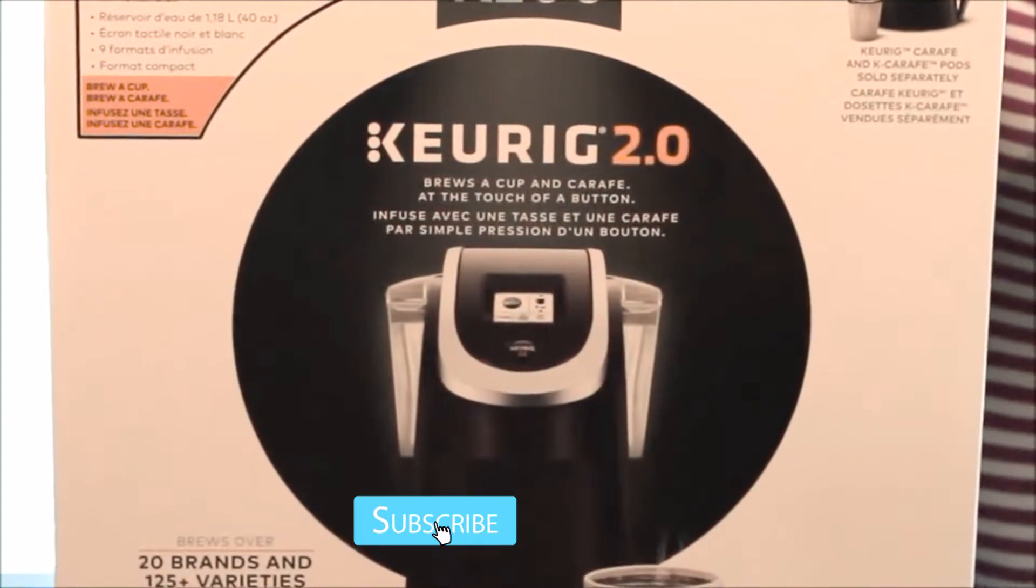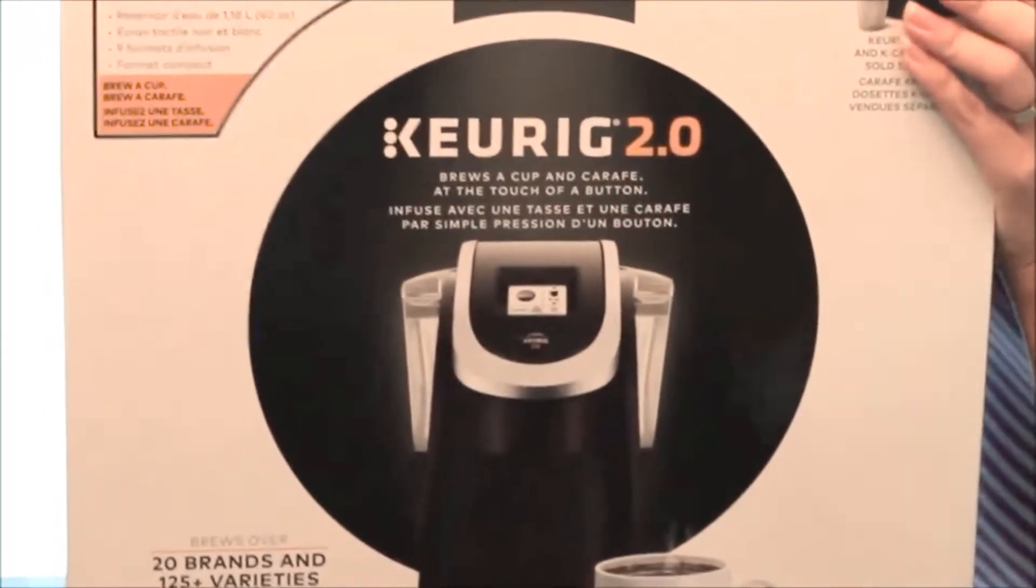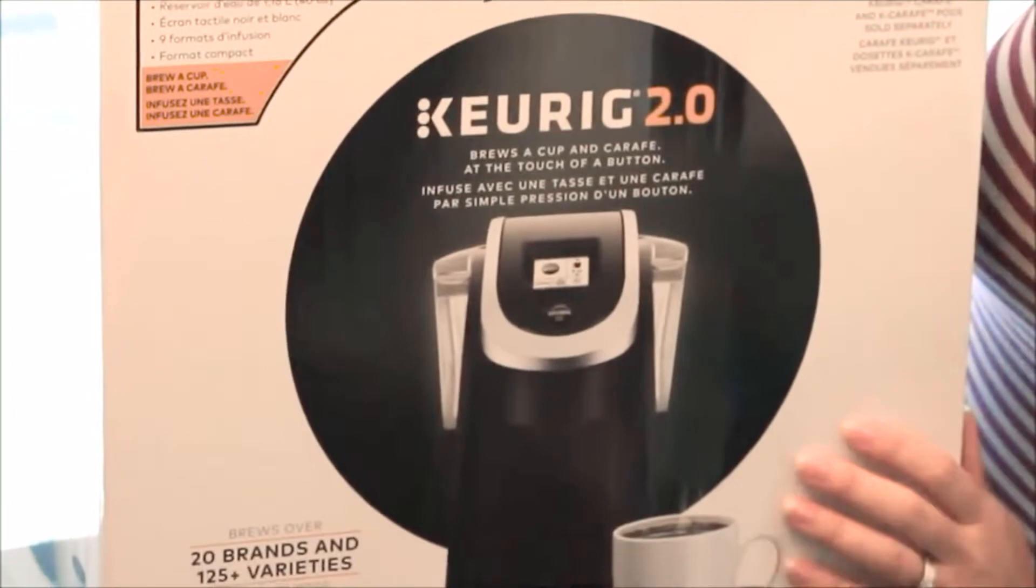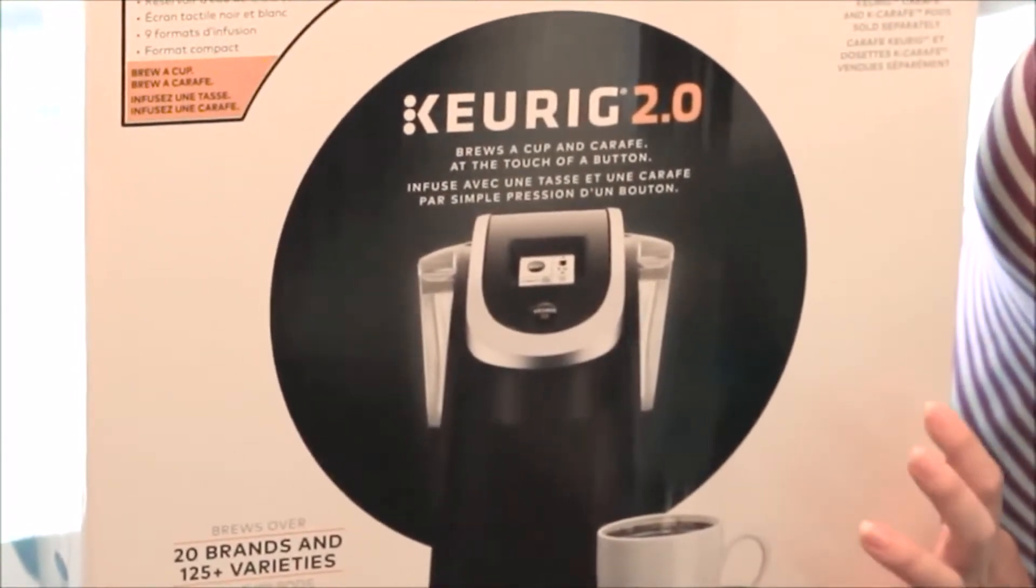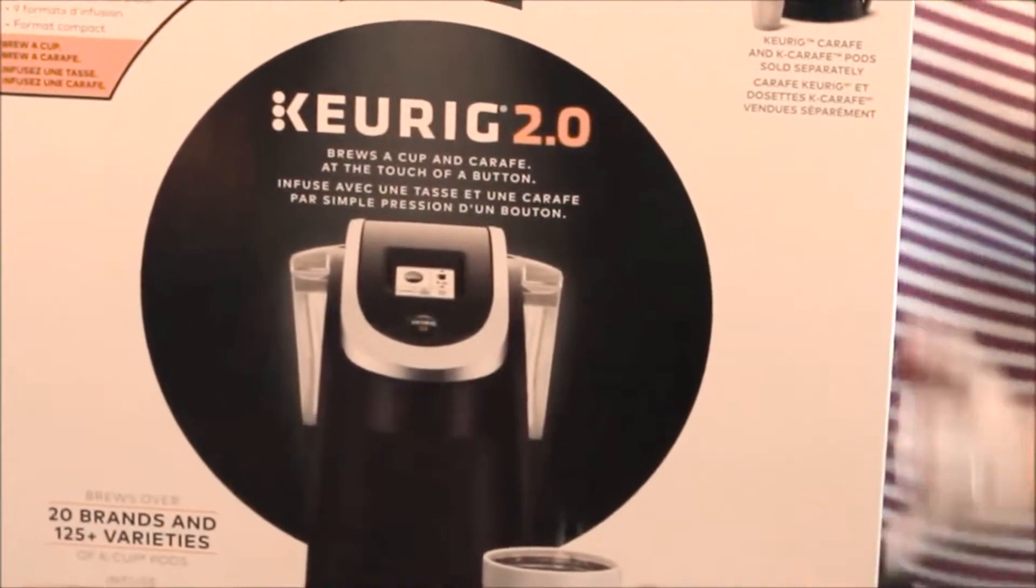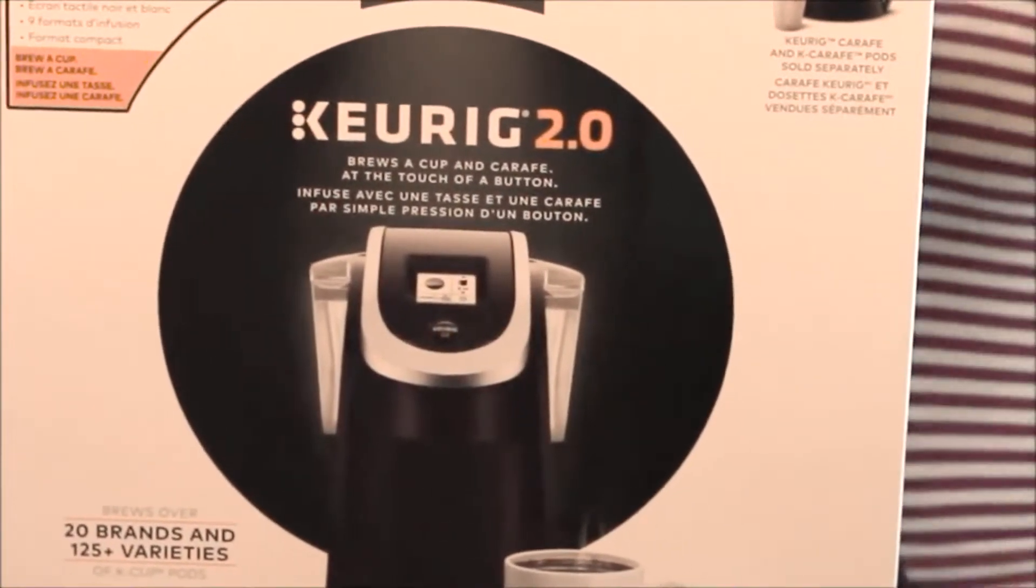So it came in an outside box and this is what was inside. It's a new Keurig 2.0 and the difference is that it can also brew, aside from a cup, it brews a carafe. So I'm going to unbox and see what comes inside of here.